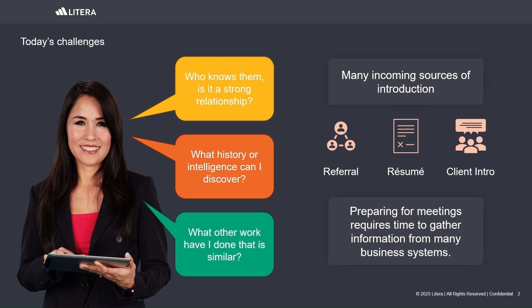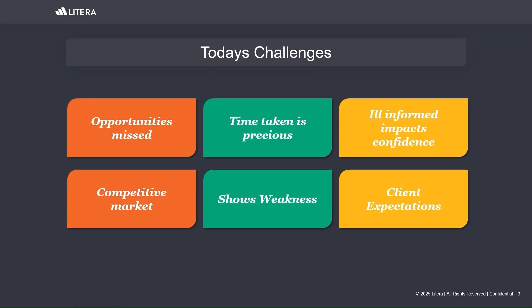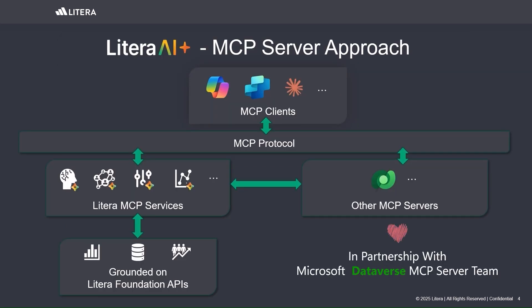Today's lawyers face a familiar challenge — resumes, client introductions, contract inquiries, all arriving daily. But critical knowledge is often missing: who knows the content, what's the history or strength of the relationship, have we done something similar before? Finding these answers often means switching between multiple business systems, wasting time, losing momentum, and consuming effort that is already at a premium. Without seamless firm intelligence, opportunities are often missed, outreach feels impersonal, and preparation is rushed, weakening trust and risking the firm's ability to win work. To solve this, we've enhanced our enterprise relationship management solution within Litera Foundation, creating a smarter way to access rich intelligence through the use of an MCP server architecture.